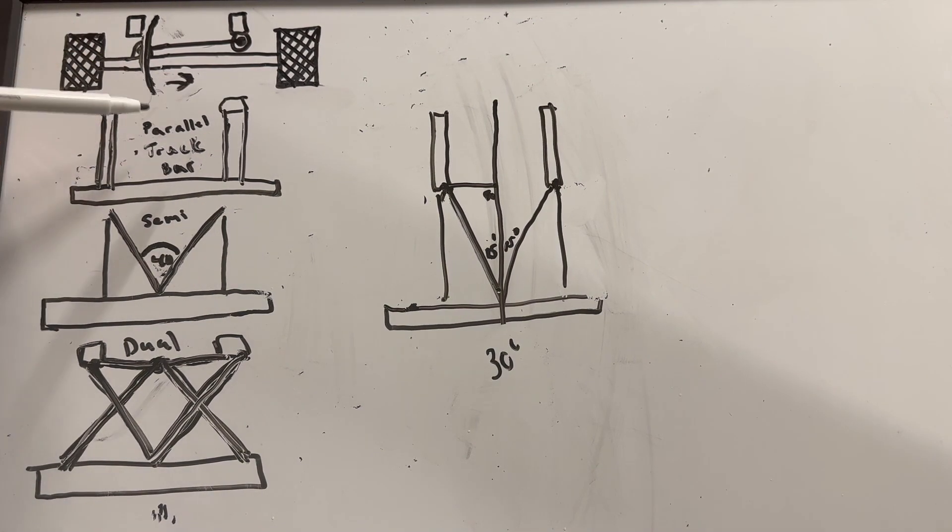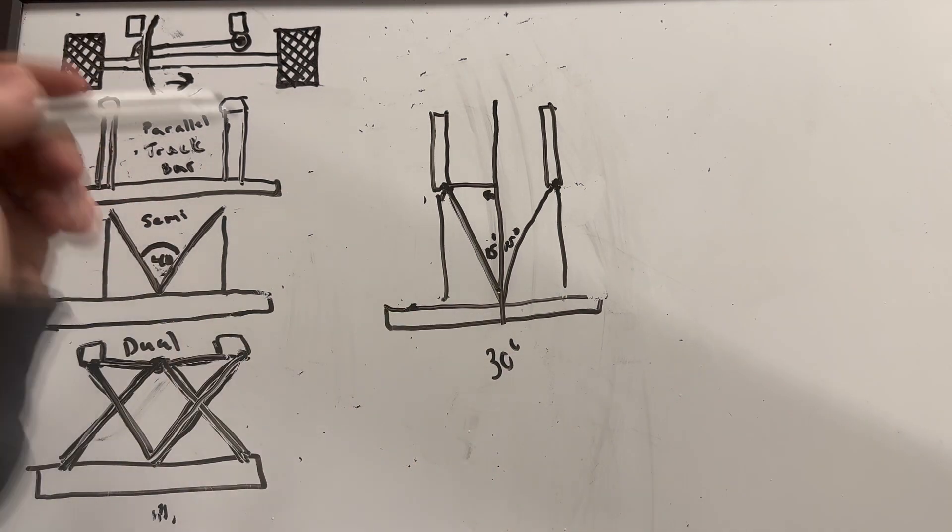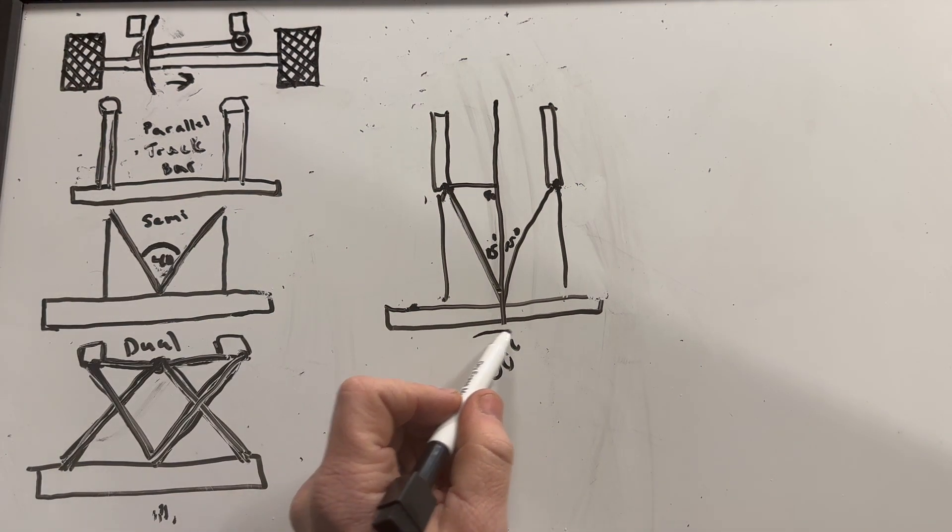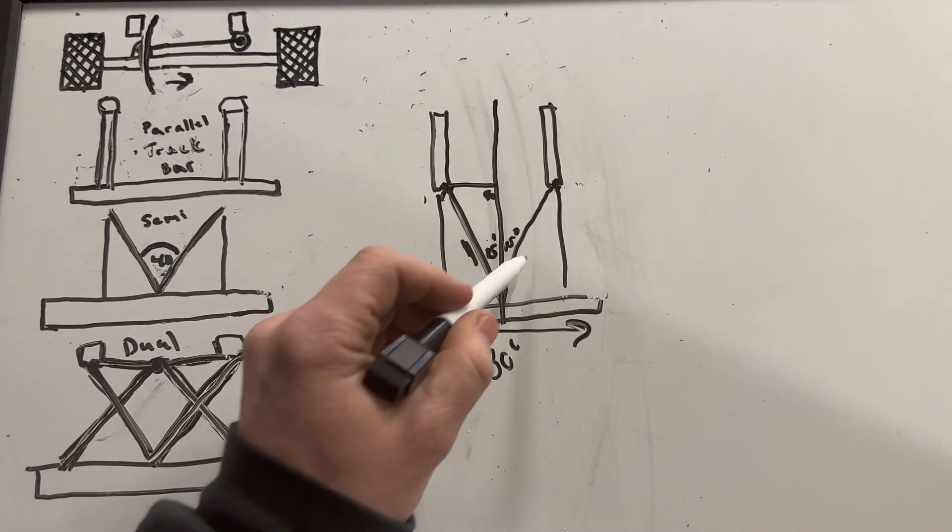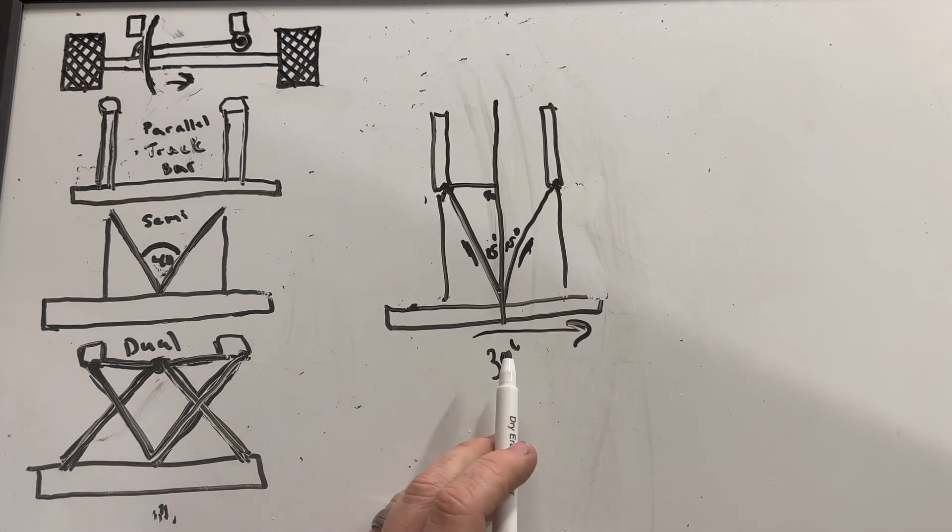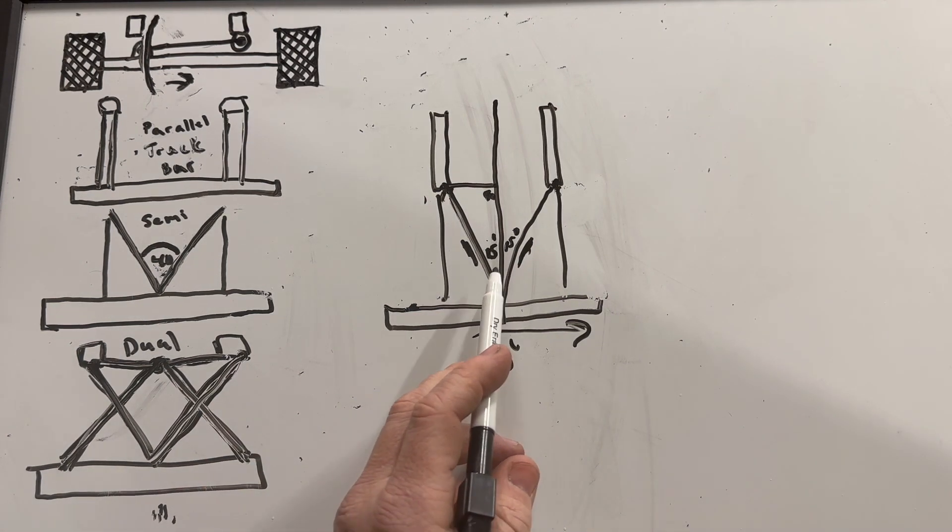So now as your axle droops and the track bar wants to drag your axle to the side, you're going to have your links fighting that. And now you're going to have the axle droop and all of a sudden start binding and your suspension is not going to move.